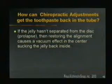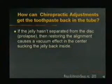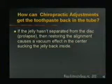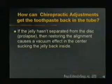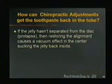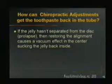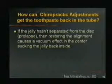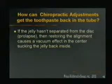But how, you ask, can this get the toothpaste back into the tube? It seems that if the jelly hasn't separated from the vertebra — which is called prolapse — then restoring the alignment of the pair through manipulation can create a vacuum effect which sucks the nucleus back into the disc.